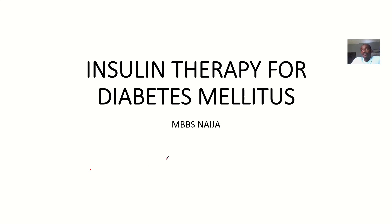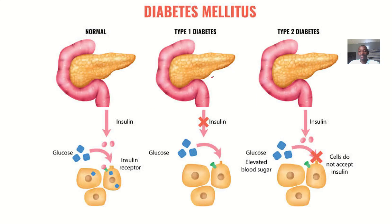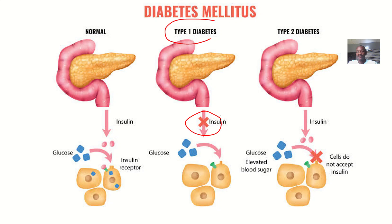Another way that diabetes mellitus can be treated is by using insulin therapy. Looking at the definitions of Type 1 and Type 2 diabetes, insulin therapy matches Type 1 diabetes most, where there is little or no insulin production at all. Insulin therapy looks at the different types of synthetic insulins that can be given to patients with diabetes, which should basically solve that problem.